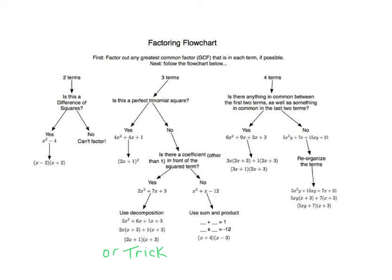If the squared term has a coefficient of one, you have a simple trinomial. Factor it by looking at sum and product: what two numbers multiply to give your last term and add to give your middle term? Those values become your factors. With three terms, it's either a perfect square trinomial, complex trinomial, or simple trinomial, and the strategies for each are listed.